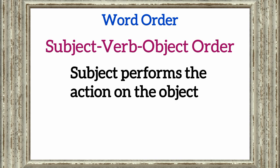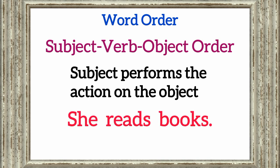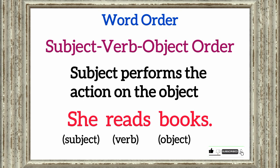In English, the typical word order is subject-verb-object (SVO), where the subject performs the action on the object. For example, 'she reads books.' Here, 'she' is the subject, 'reads' is the verb, and 'books' is the object.